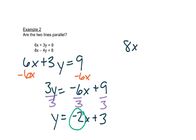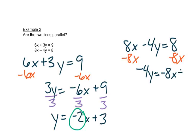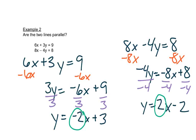So let's do the same thing for the other equation. I'll subtract 8x from both sides. And then I'm going to divide each piece by negative 4. That gives me a positive 2x minus 2. The slope here is positive 2.